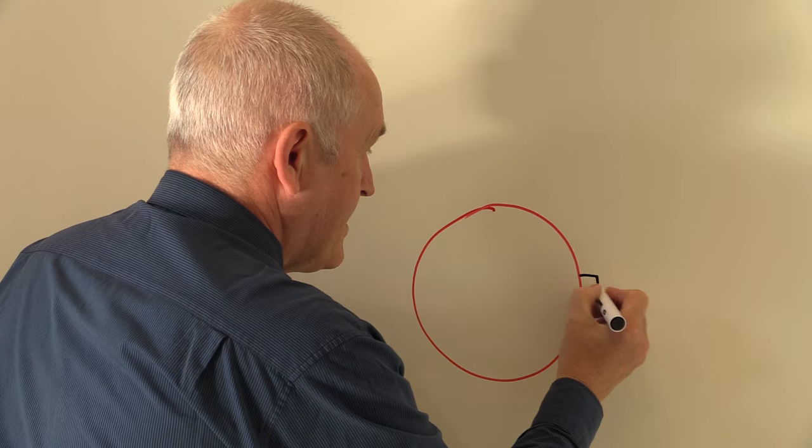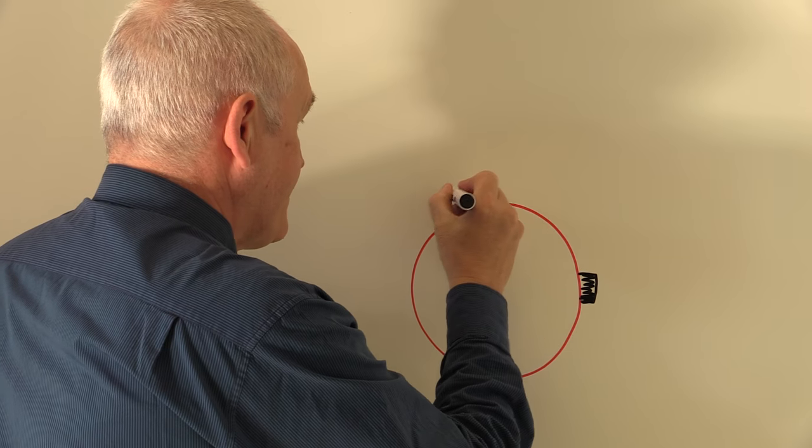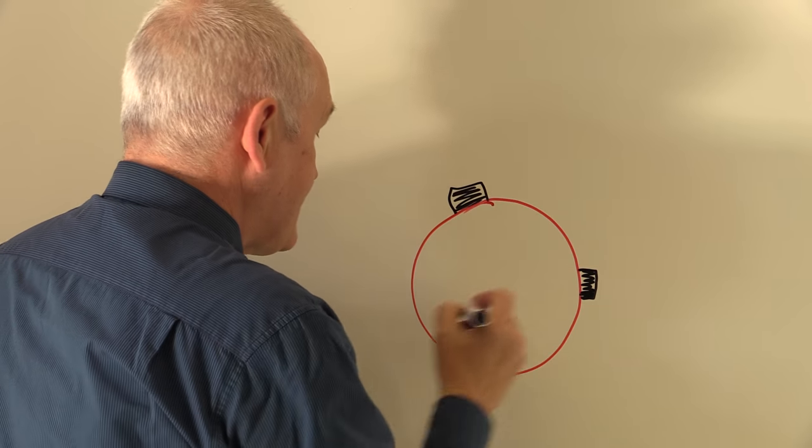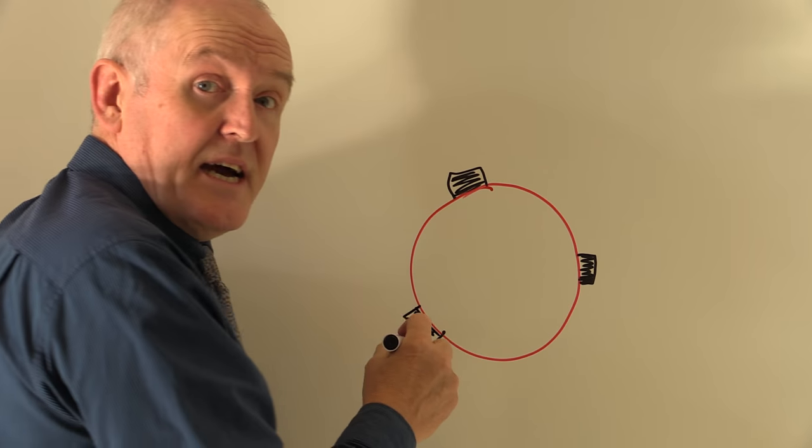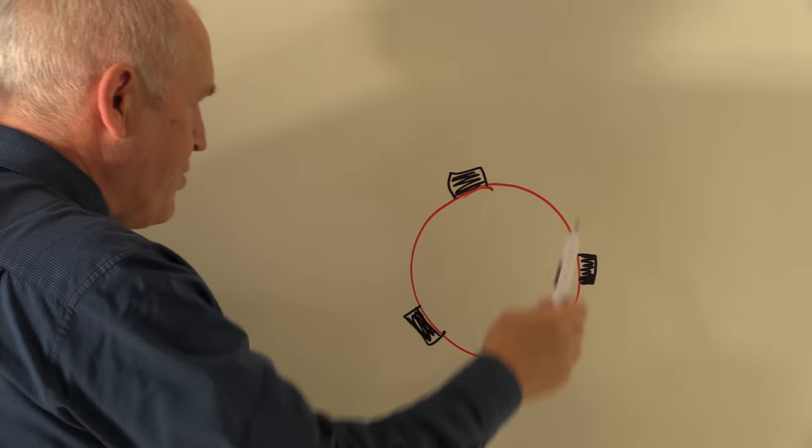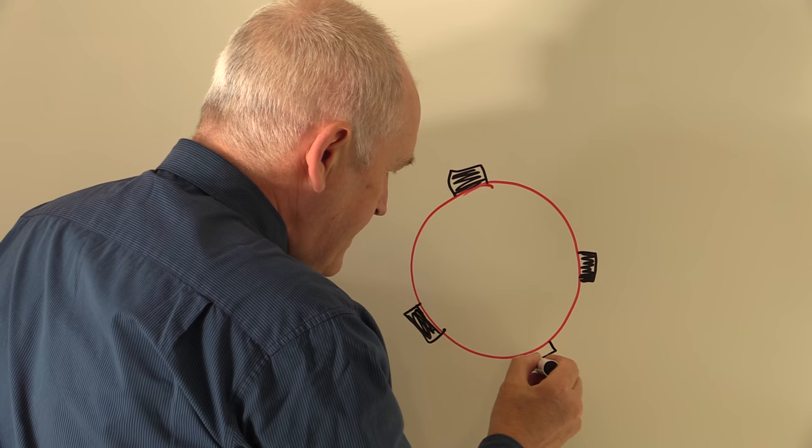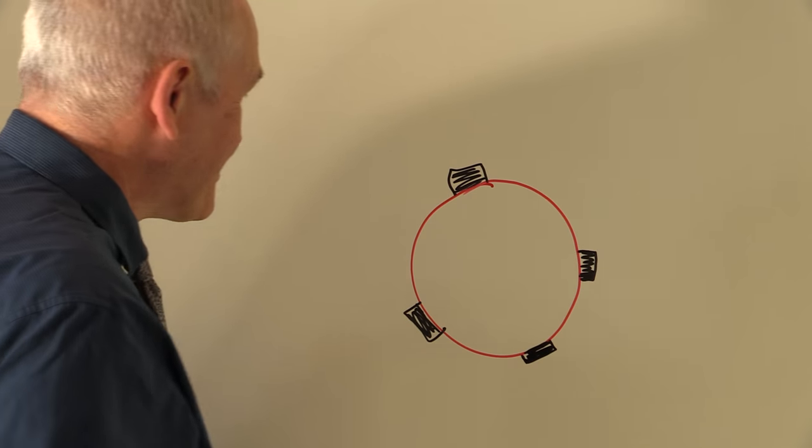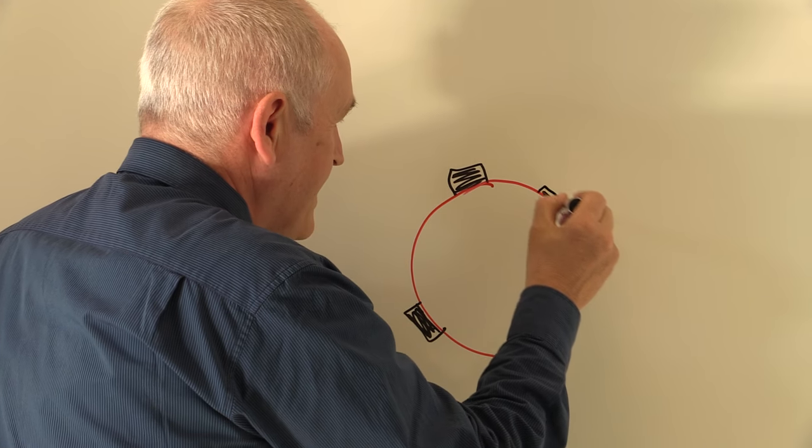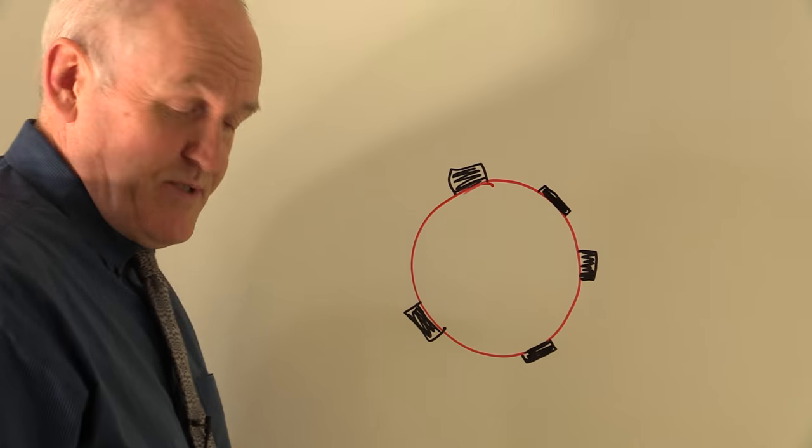So here we have a diagrammatic representation of the Rhesus factor. It's an antigen, it's a protein, and in fact it may be a membrane transport protein. There's currently debates about what the Rhesus factor actually does in biochemical terms. But it's either present or absent.